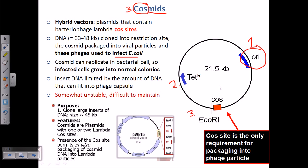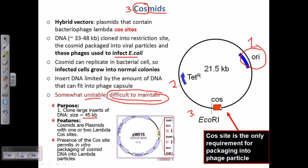Cosmids are somewhat unstable — that is the main disadvantage. However, you can clone large inserts of about 45 kb, and the presence of cos sites permits in vitro packaging into the bacteriophage, which can then infect bacterial cells. The disadvantage is that it is somewhat unstable and difficult to maintain; we cannot store it for a long time because the blend of phage and plasmid modifications sometimes becomes unstable. But overall it has many more advantages than disadvantages.